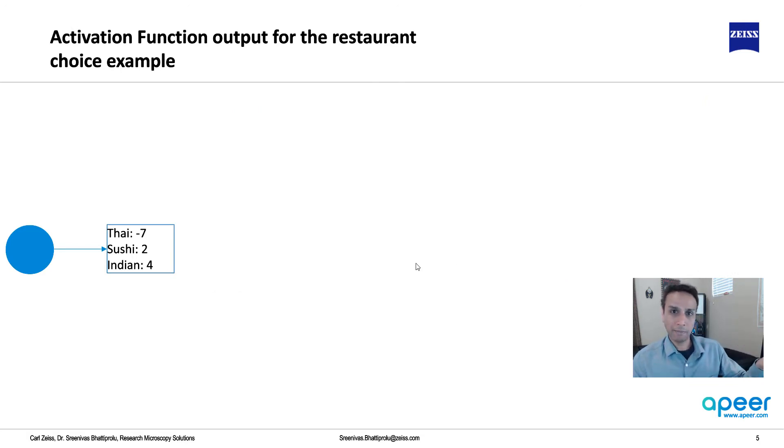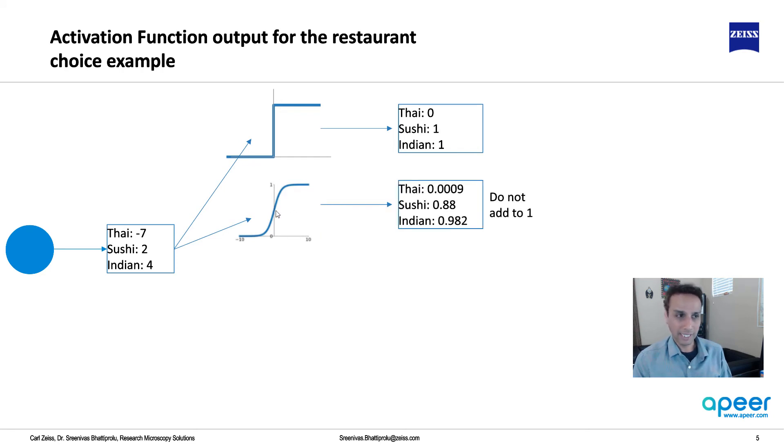So let's take that information and apply that to the example we are talking about, the Thai food and sushi or Indian. So step function, we already saw that. Thai zero, sushi one, and Indian one, because these two are positive, that's a negative value. Now, if you look at sigmoid, how does that work out? I'll show you the example in Python in a second, and I'll share the notebook with you, so you can do this yourself, but when you run these numbers by our sigmoid, you get values of 0.309 for Thai. Obviously, that's ruled out. For sushi, you get 0.88 and Indian 0.982. And notice that they all do not add to one, because each of this is like a binary classification. Is it Thai or not? Is it sushi or not? Is it Indian or not?